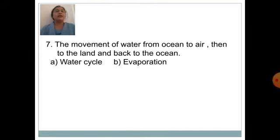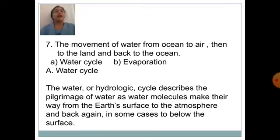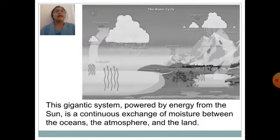The movement of water from ocean to air, then to the land and back to the ocean is known as — option A: water cycle, option B: evaporation. Answer is option A: water cycle. The water or hydrologic cycle describes the journey of water molecules from earth's surface to the atmosphere and back again, in some cases to below the surface. The system is powered by energy from the sun and is a continuous exchange of moisture between the ocean, the atmosphere and the land.